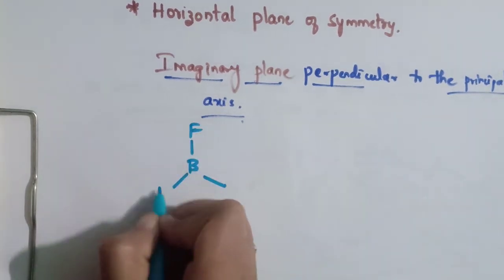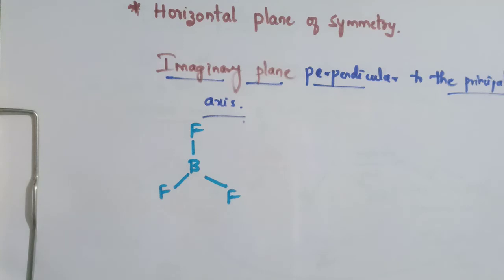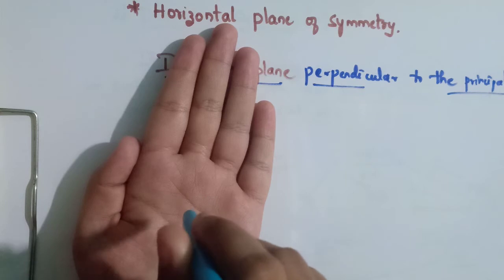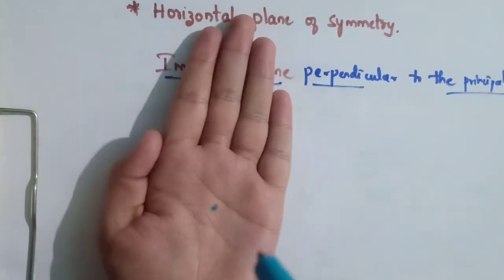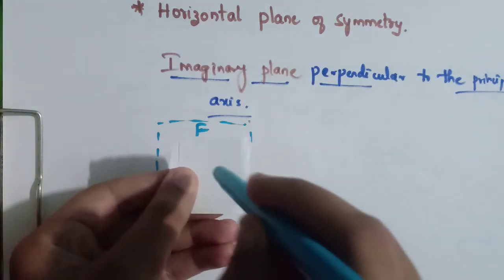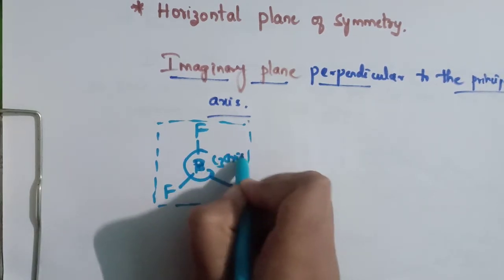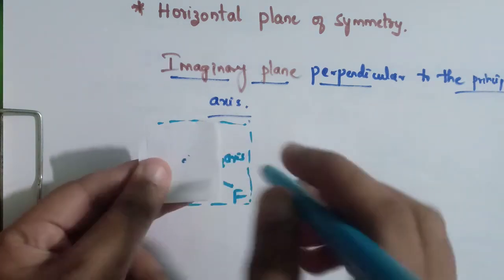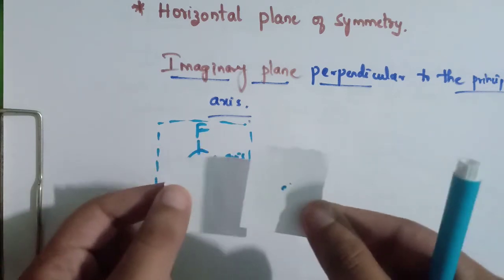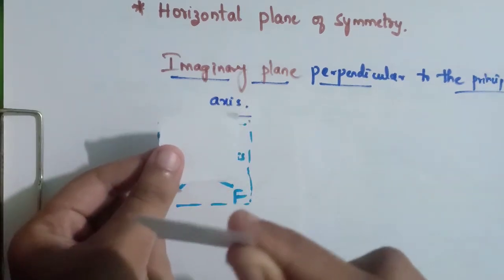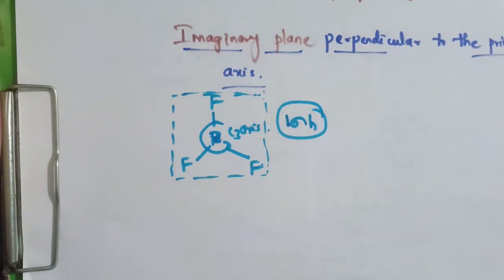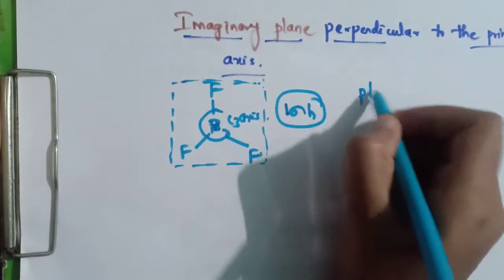Let's see sigma_h in the BF3 molecule. Here is the BF3 with the C3 principal axis. Passing an imaginary plane perpendicular to this principal axis through the boron atom divides BF3 into two halves that are mirror images of each other. In BF3, only one sigma_h is present.